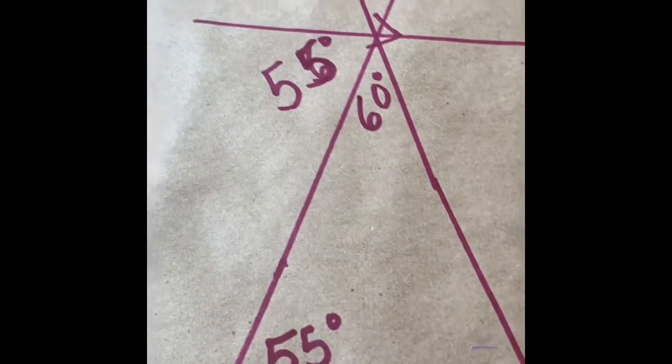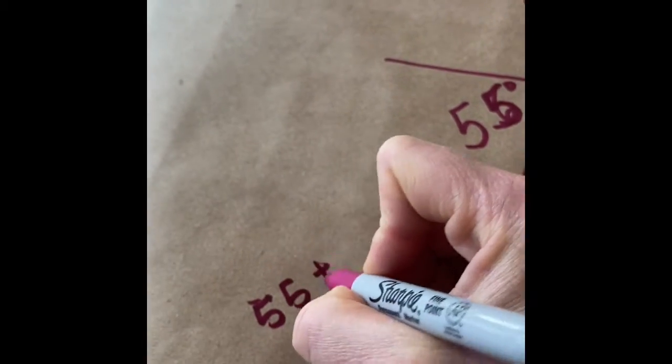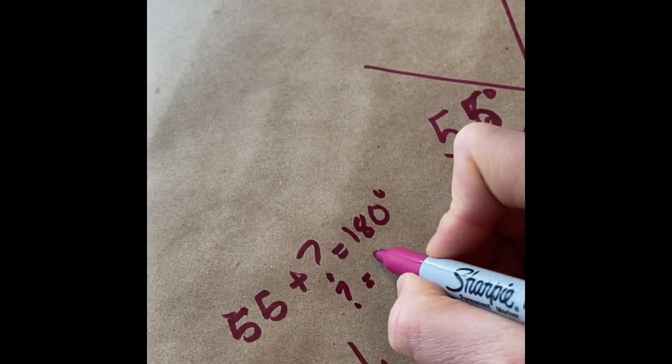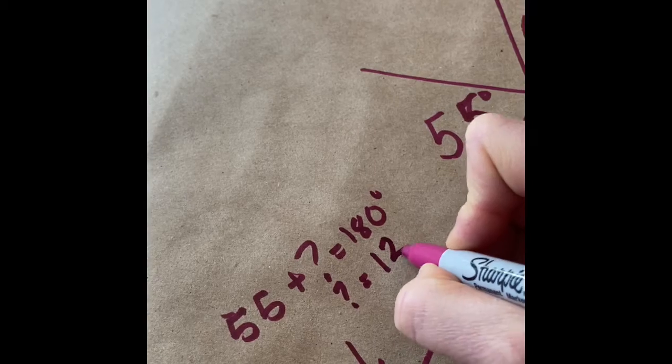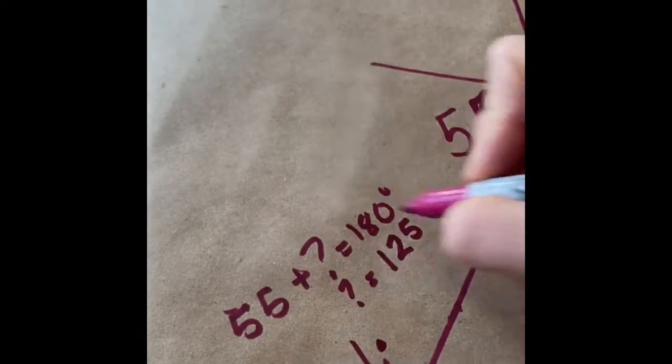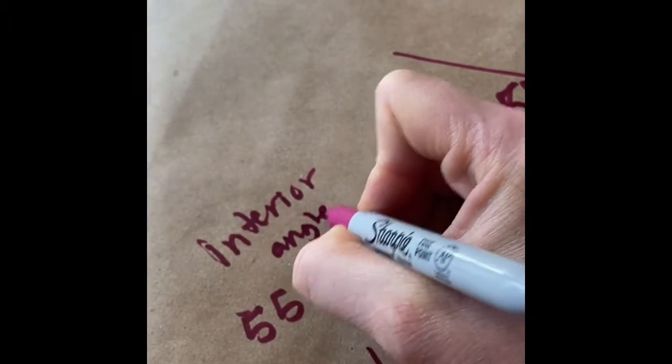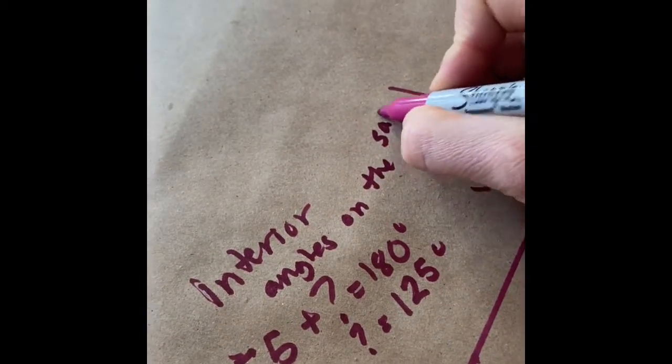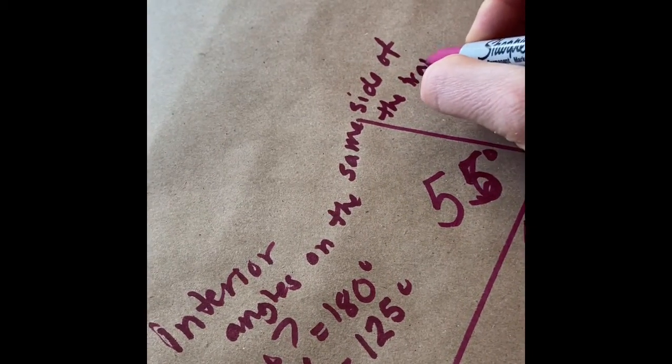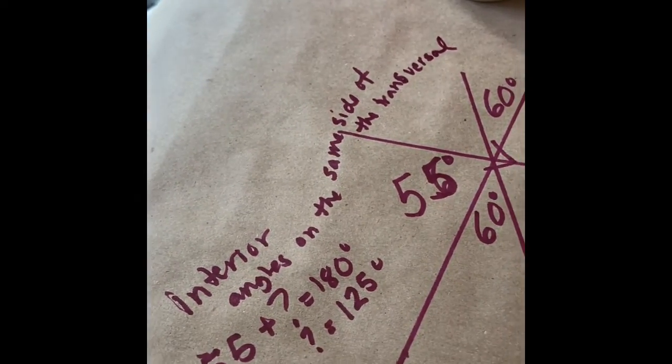So over here this angle right here, I know to find this angle I go 55 plus what number gives me 180. Well I know that that number I think is going to be 125. So this angle right here is 125 degrees because of the C pattern. That's called interior angles on the same side of the transversal. I know that's a big rule but that's the rule that we use to find 125.